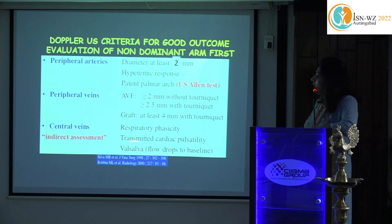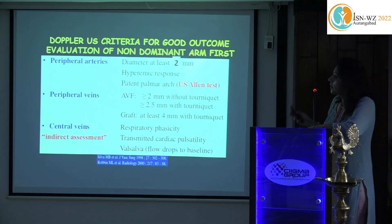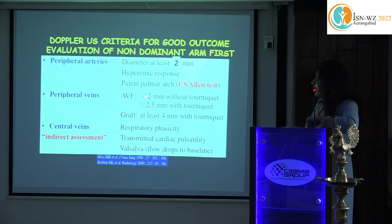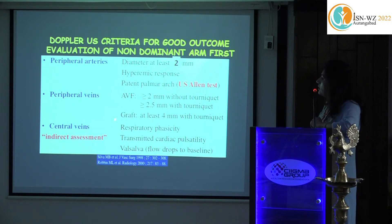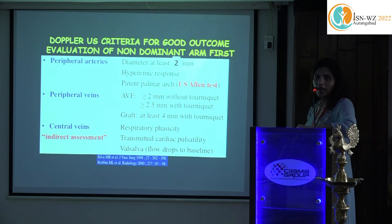In summary: peripheral arteries should have a diameter of at least 2 mm. When evaluating the artery, check for the hyperemic response to confirm healthy distensibility. A patent palmar arch is needed when a wrist fistula is planned. Peripheral veins should be more than 2.5 mm with tourniquet. Central veins require respiratory phasicity assessment. We are not discussing grafts, as in our institution only native AV fistula surgery is performed.